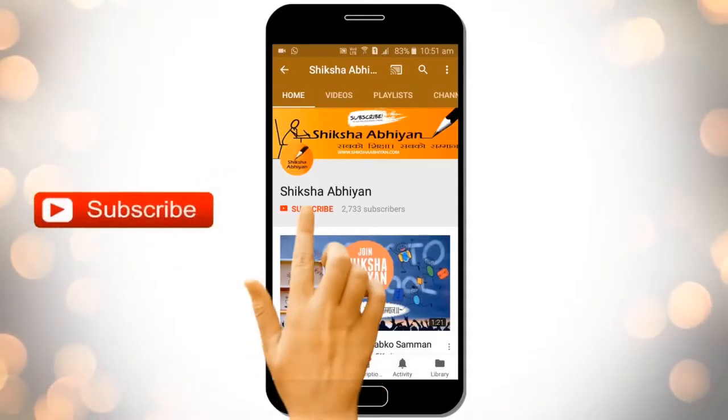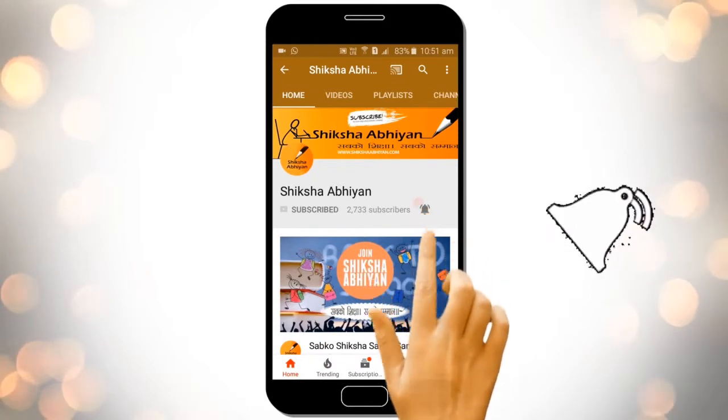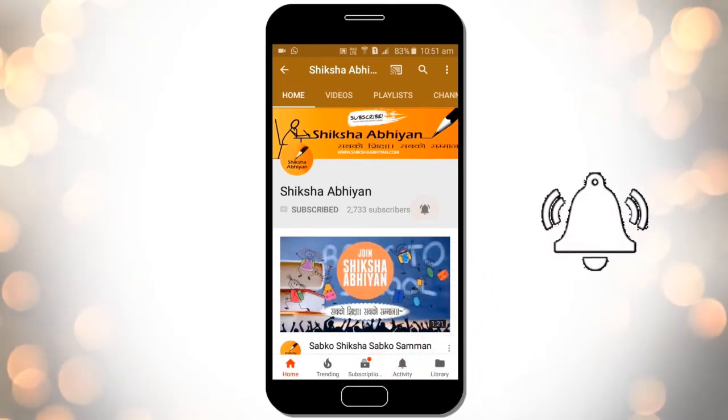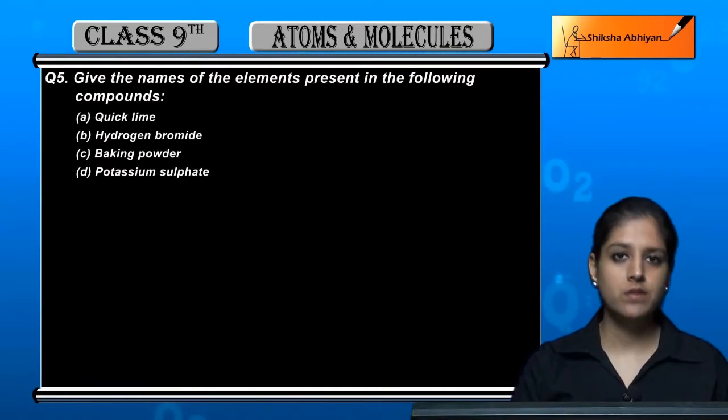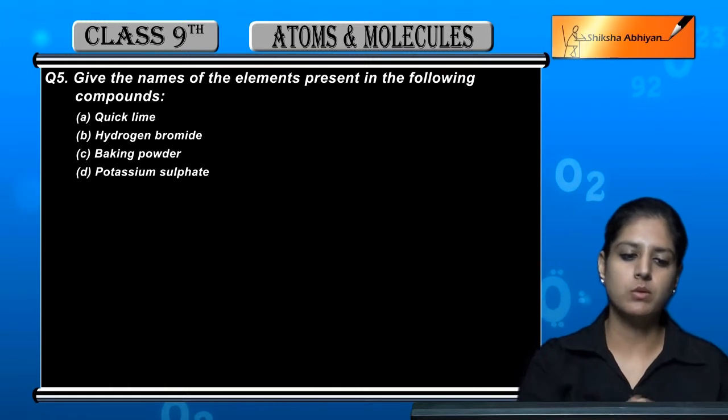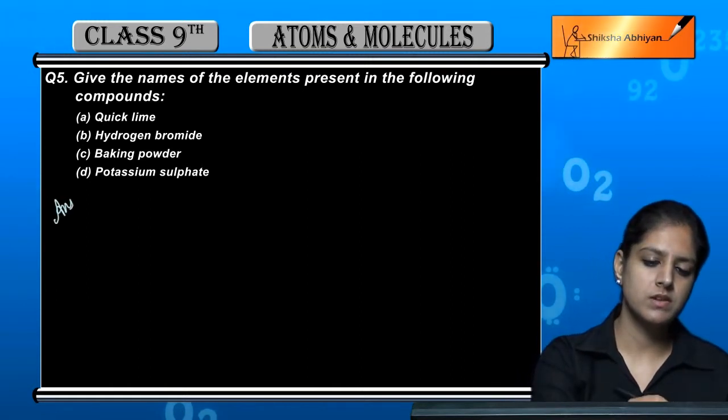Subscribe to our channel by clicking the subscribe button and bell button. Question number 5: Give the names of the elements present in the following compounds.